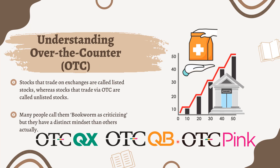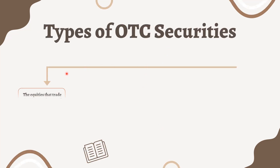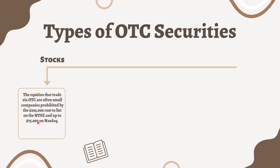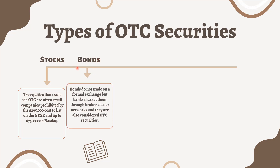In terms of OTC securities, stocks — the equities that trade via OTC — are often small companies prohibited by the $295,000 cost to list on the NYSE and up to $75,000 on NASDAQ. Some well-known large companies are also listed on the OTC markets, such as Aleons SE, BASF SE, Roche Holding AG, and Danone SA.